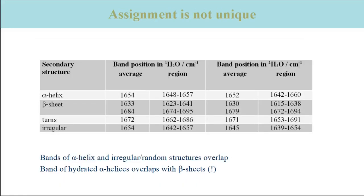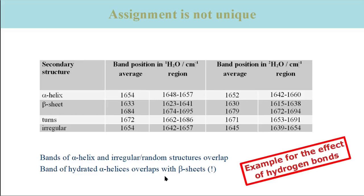The next problem is that the assignment of component bands to secondary structure is not unique. As already mentioned, spectral regions of alpha helices and other structures overlap — here in the table, alpha helices and irregular structures. Another ambiguity concerns hydrated helices, the absorption of which overlaps with that of beta sheets. The reason is additional hydrogen bonds between their carbonyl groups and water, which lead to a downshift of their amide-1 band. As a result of these ambiguities, there may be several possibilities to assign a given component band to a particular secondary structure, which may lead to an erroneous interpretation.